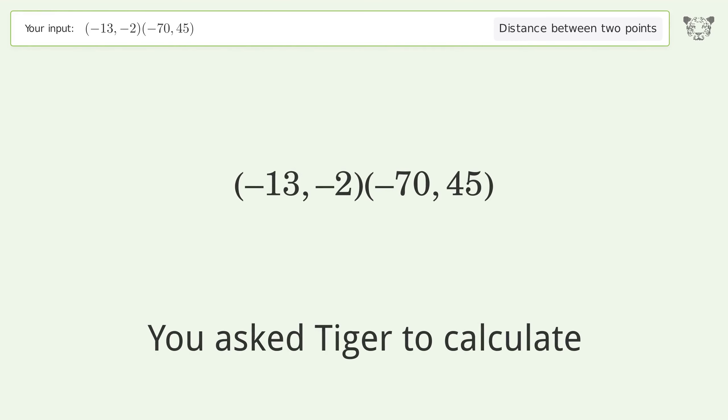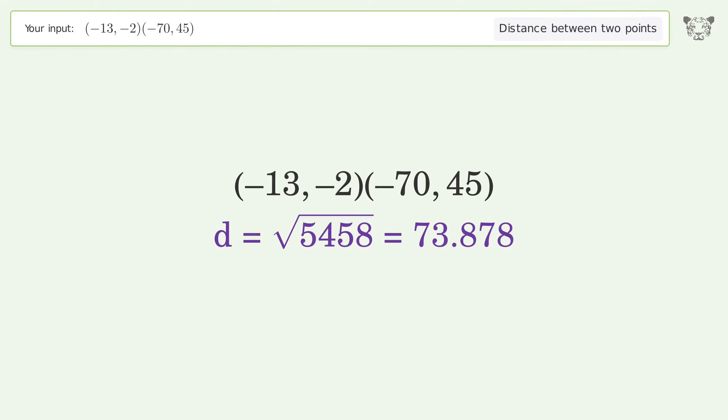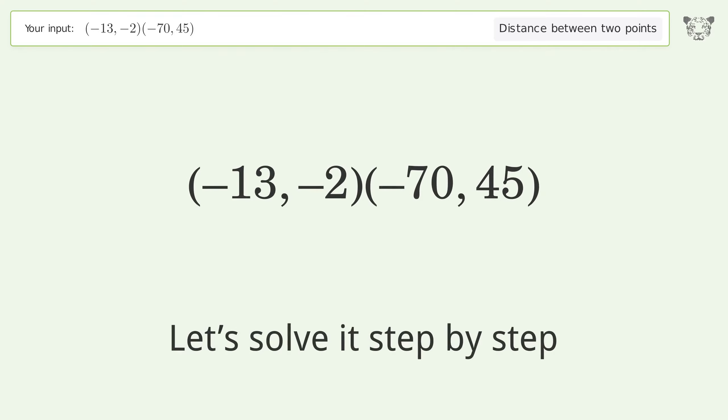You asked Tiger to calculate the distance between two points. The distance between the two points is the square root of 5458, or 73.878. Let's solve it step by step.